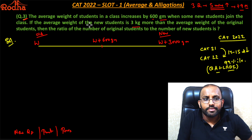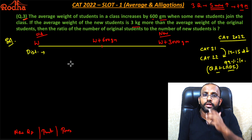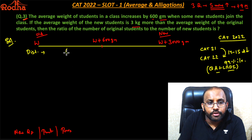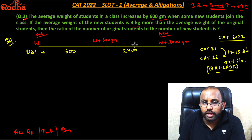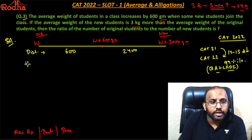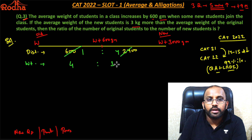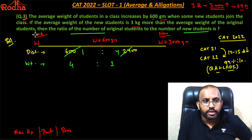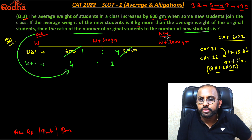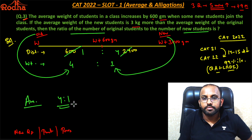Using the allegation seesaw method, we look at the distances. The distance on one side is 600, and on the other side it's 2,400. So the weight ratio — by the seesaw method — becomes 1 is to 4. That means the ratio of old students to new students is 4 is to 1. So my answer is 4 is to 1.